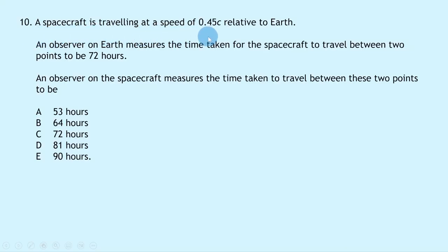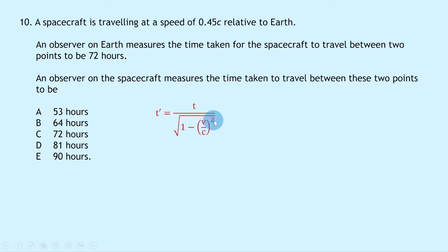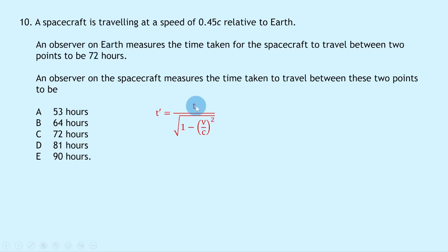Question 10 says a spacecraft is traveling at 0.45c relative to Earth. An observer on Earth measures the time to travel between two points as 72 hours. An observer on the spacecraft measures the time as? This is a time dilation question using t' = t / √(1 − (v/c)²). Here t' is the relativistic (dilated) time measured by the Earth observer, and t is the proper time measured by the observer on the spacecraft — which is what we're asked for.